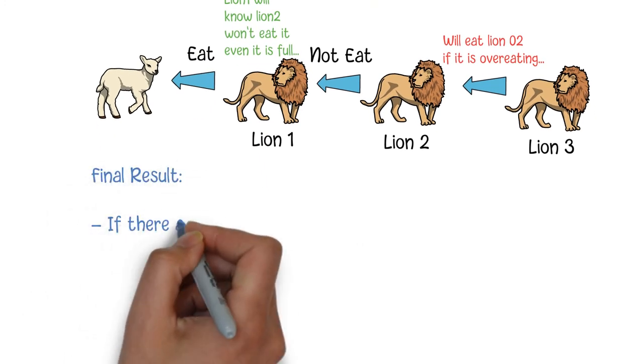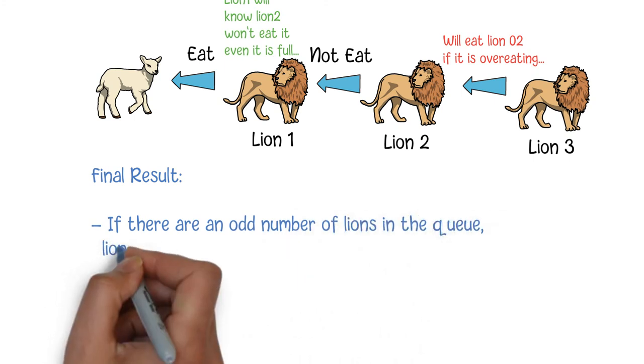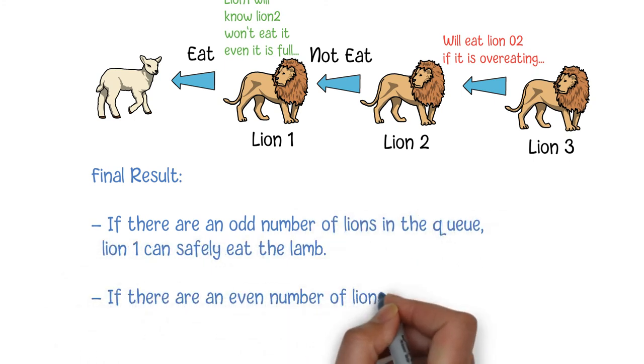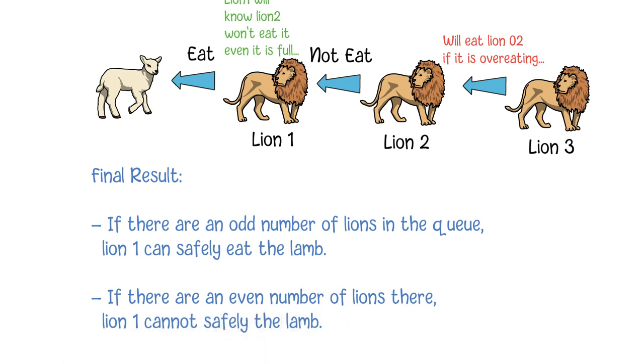So, the final result is: if there are an odd number of lions in the queue, lion 1 can safely eat the lamb. Conversely, if there are an even number of lions there, lion 1 cannot safely eat the lamb.